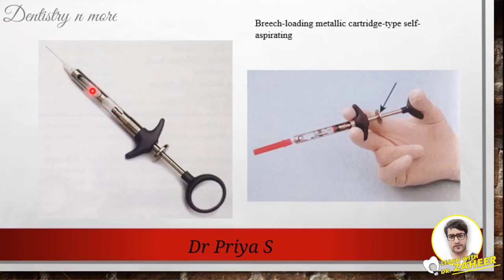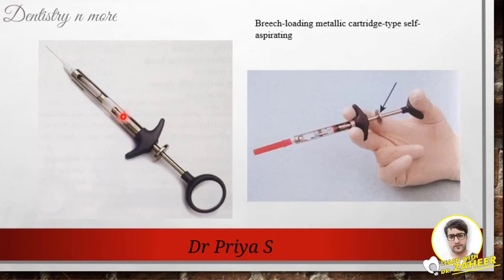The positive pressure created within the cartridge, which is then converted into negative pressure for aspiration, can be produced by the metallic plunger alone or by pressure from the thumb ring. It is found that the thumb ring produces twice as much negative pressure as the plunger shaft. The use of a self-aspirating dental syringe permits easy performance of multiple aspirations throughout the period of local anesthetic deposition.